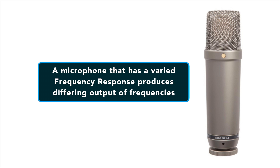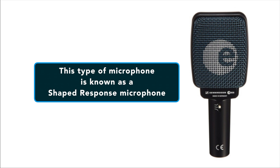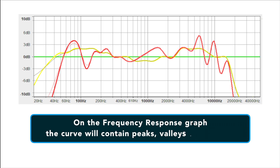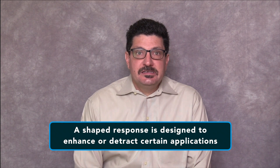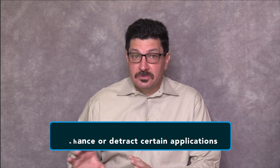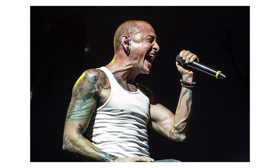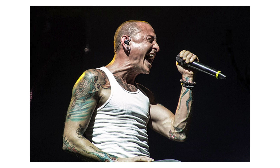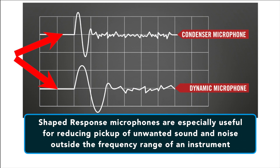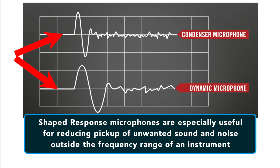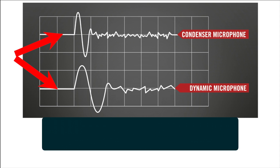A microphone that has a varied frequency response produces differing output at different frequencies. This type of microphone is known as a shaped response microphone. On the graph, the curve will contain peaks and valleys. A shaped response is designed to enhance or detract from certain applications — for example, a microphone may have a peak around 5 kilohertz to increase the presence of a vocal. Shaped response microphones are especially useful for reducing pickup of unwanted sound and noise outside the frequency range of a particular instrument.